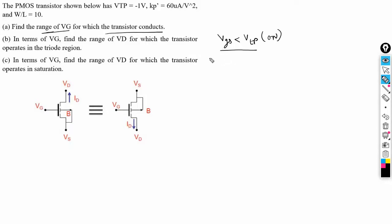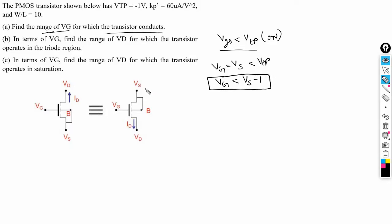We can write VGS in terms of the given voltages. VGS equals VG minus VS, and this should be less than VTP. So we can write it as VG less than VS plus VTP, and since VTP is given as minus 1, for VG less than VS minus 1, this PMOS transistor conducts. This is the answer for the first part.